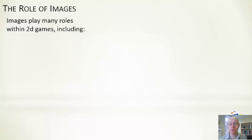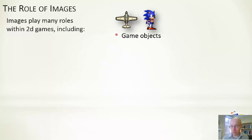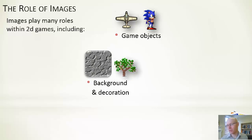Things that images do include game objects — fairly obviously, if we have objects within the game, we will have images that we draw to represent those objects. It also includes background and decoration. If we do have background layers or decorative objects, these will be visualised using images.